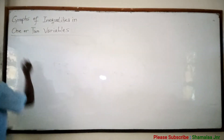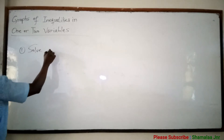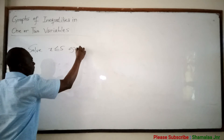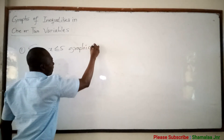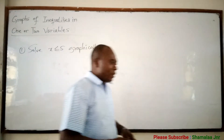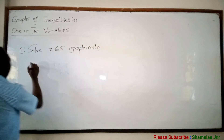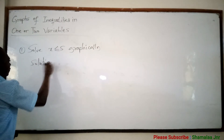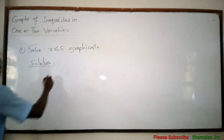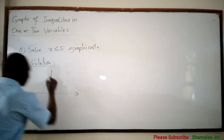We can give you something like this: x less than or equal to 5, graphically. When you are given something like this, how do you go about it? So let's look at the solution. Now when you are given this, you have to draw your x-y plane.